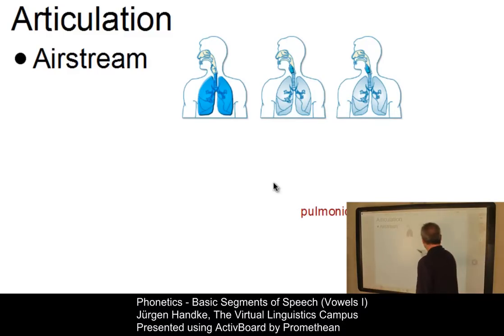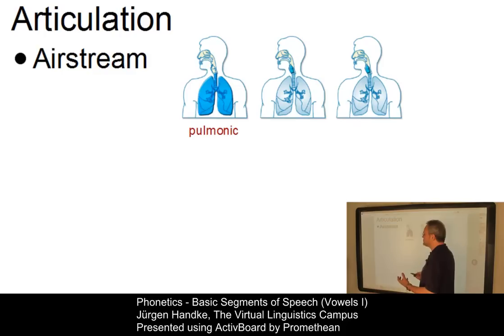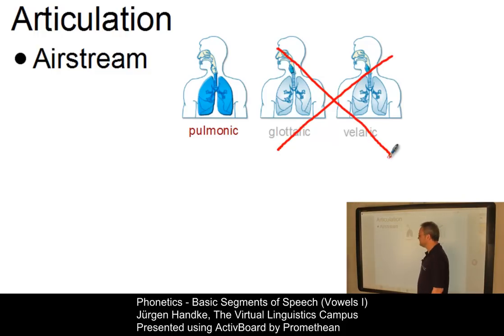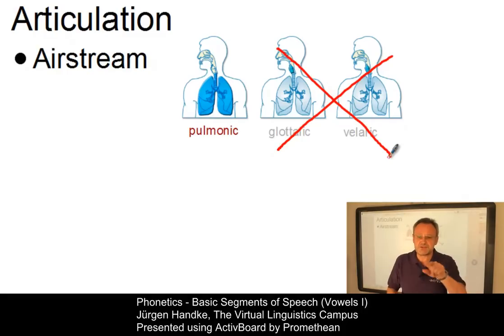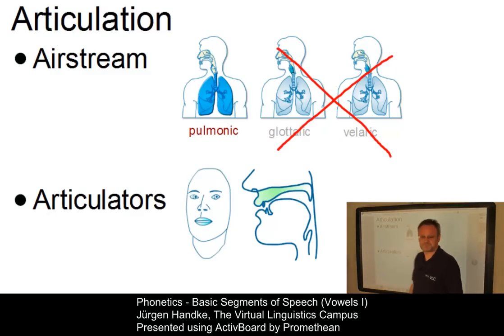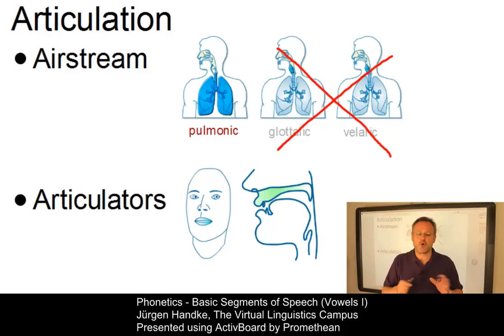Vowels are speech sounds that involve pulmonic air and a free air passage to the vocal tract. They cannot be produced with glottalic or velaric air, so these two types of airstream are clearly out in the production of vowels. Unlike consonants, which can be described in terms of different places of articulation, vowels cannot easily be described by means of articulatory criteria. Instead, they are defined in terms of an abstract vowel space that serves as a coordinate system known as the cardinal vowel chart.